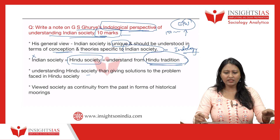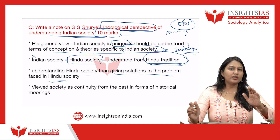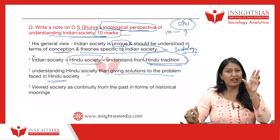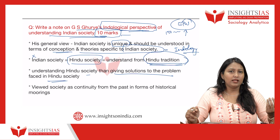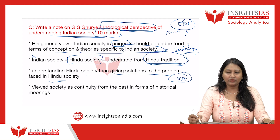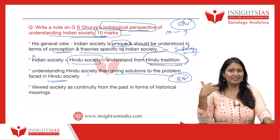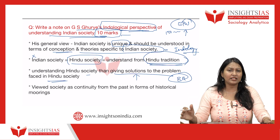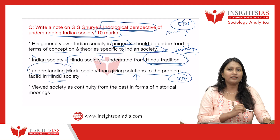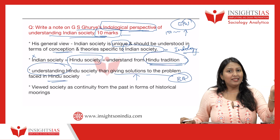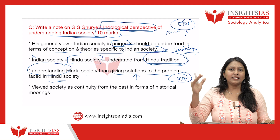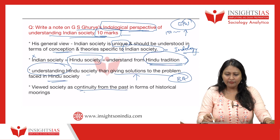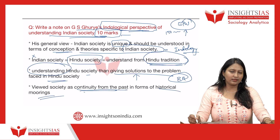His aim was to understand Hindu society rather than jumping to giving solutions to its problems. He focused on understanding the culture, traditions, norms, and values, because if we understand those, we can understand what the society is. Most British anthropologists and surveyors tried to give solutions to problems in Indian society without first understanding it. Ghurye emphasized: let's understand first, and then if required, we'll give solutions.